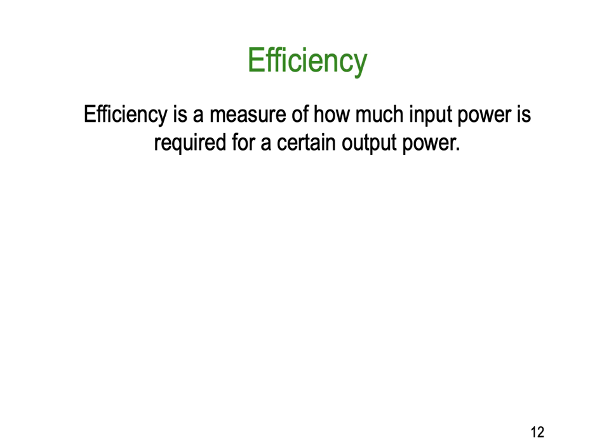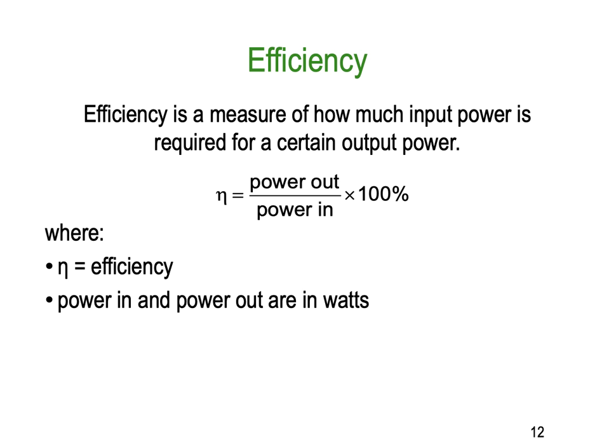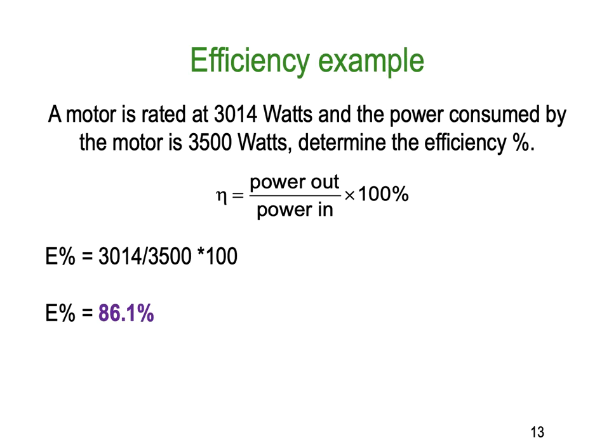Efficiency. This comes back to lesson three where we did some efficiency. Efficiency is a measure of how much input power is required for a certain type of output power, often applied to mechanical devices like motors. The efficiency η equals power out divided by power in multiplied by 100 to put it in percent. That's the same formula we used in lesson three. Power in and power out have to be in watts.